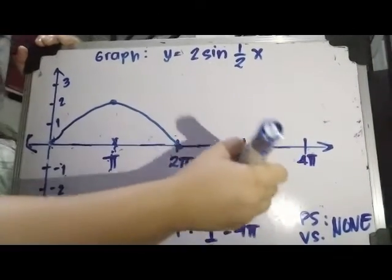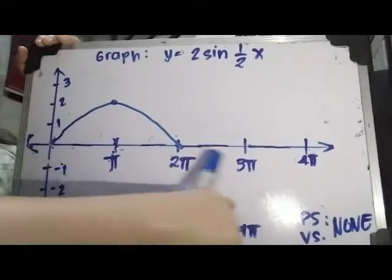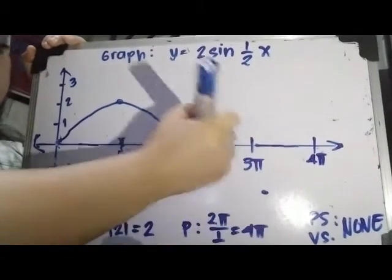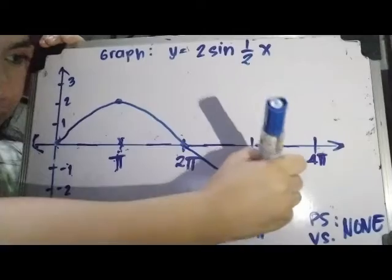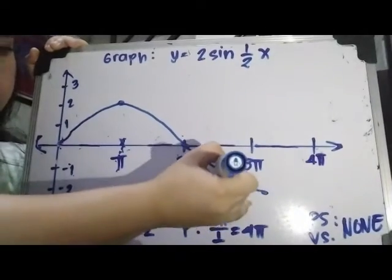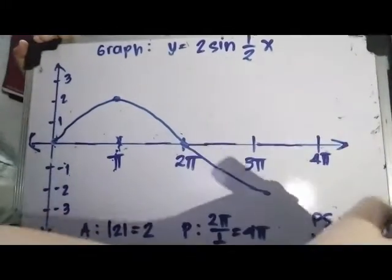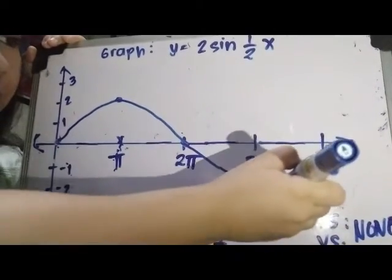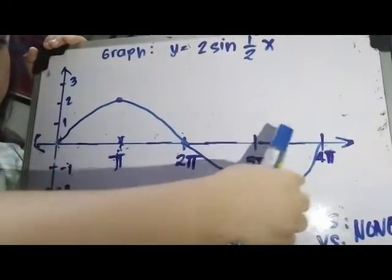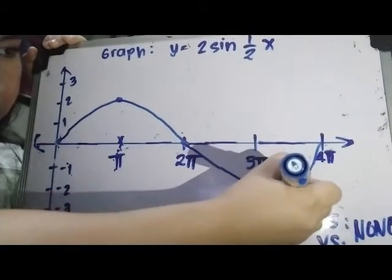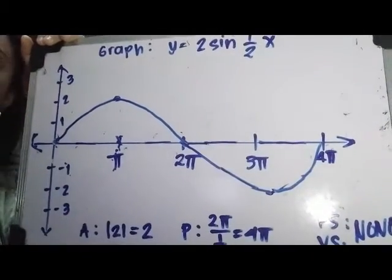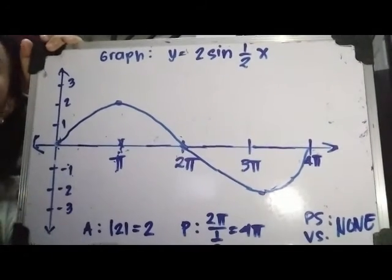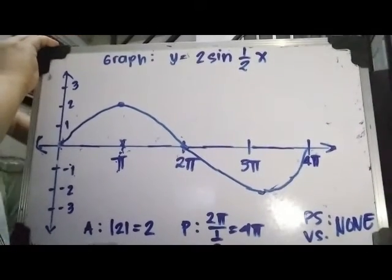Next, go down to the trough — 2 units down from the center line. Then go back to the center line at 4π. So there we have it — that is the graph of y equals 2 sine one-half x.